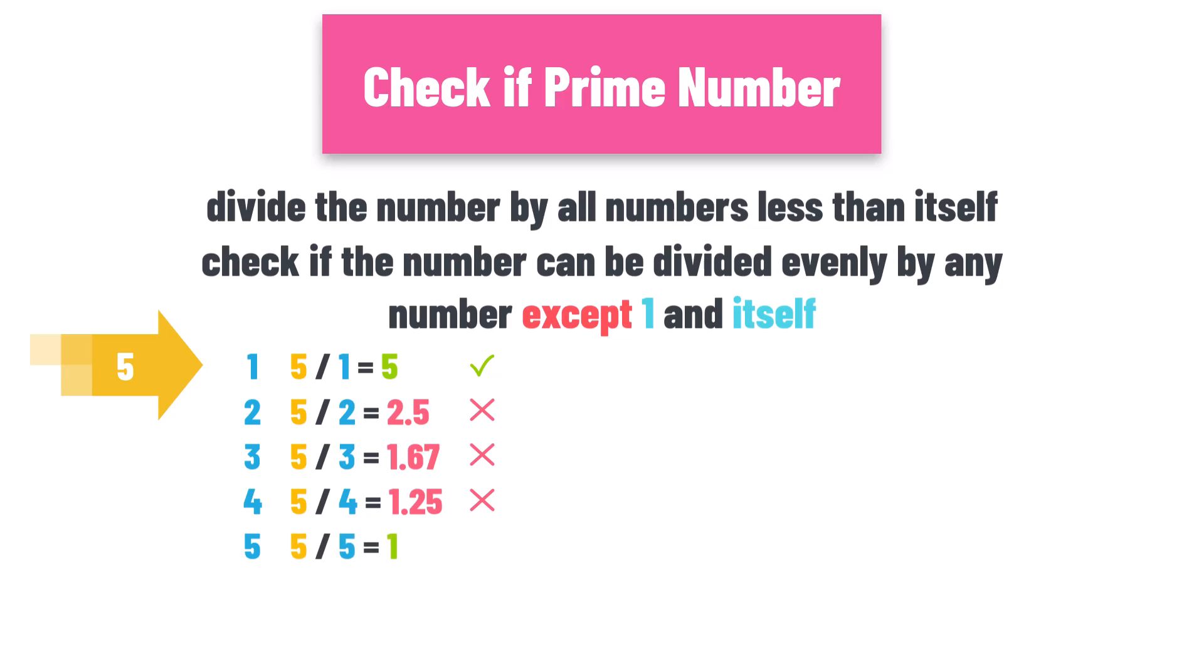5 divided by 5 is 1. It can be divided evenly. As you see, we can divide the number 5 evenly only by 1 and itself, therefore number 5 is a prime number.